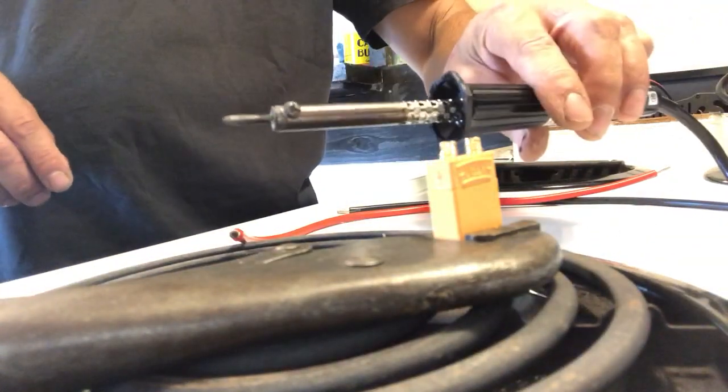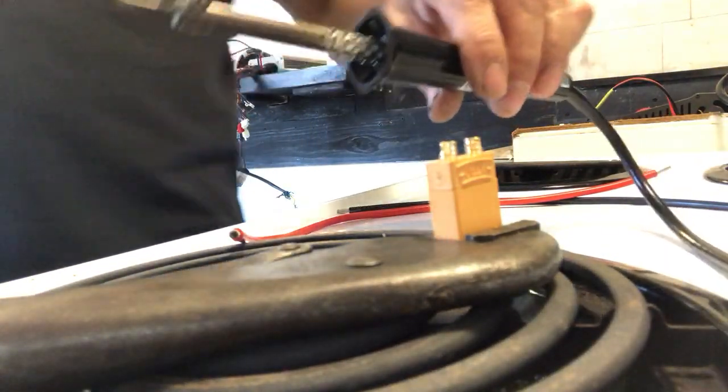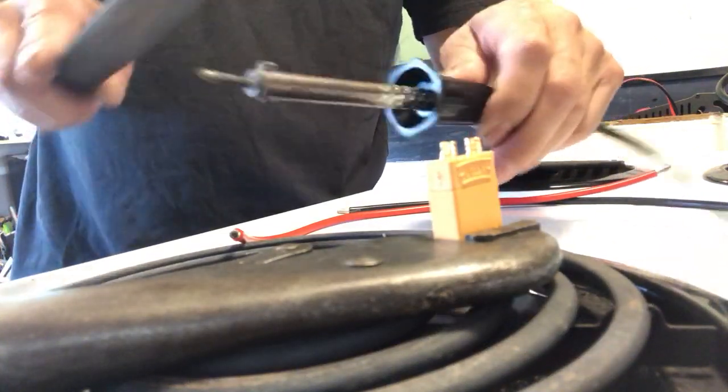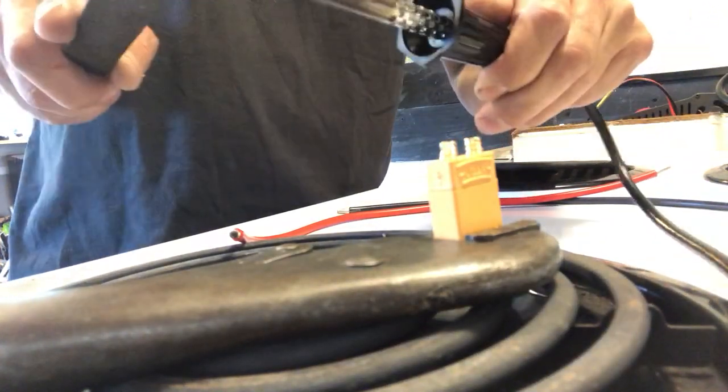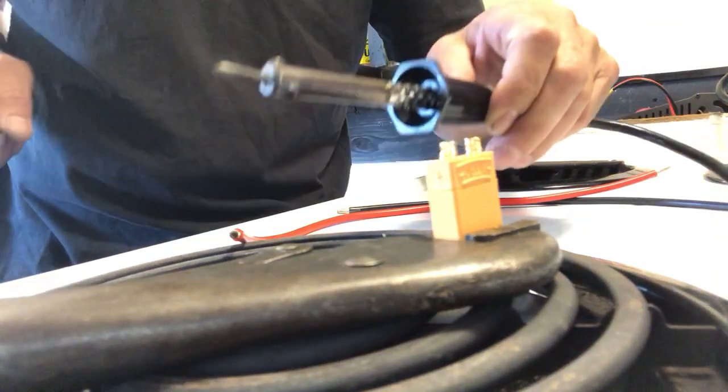I got my soldering iron right here. I usually keep this clean, the tip, with a file. When it gets that black residue on it, it doesn't get hot.